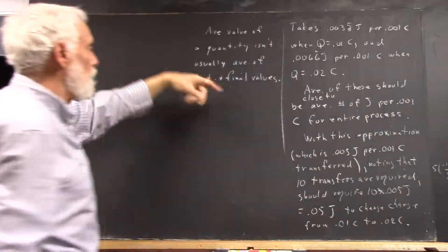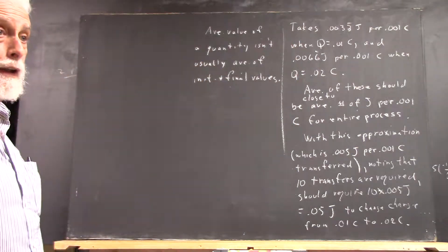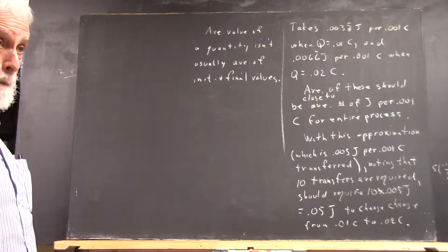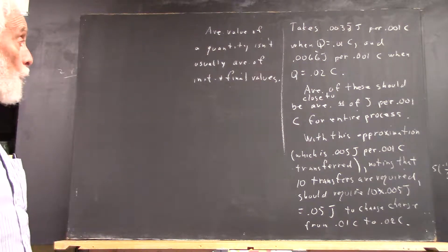The average value of quantity isn't usually the average of the initial and final values. When is it?